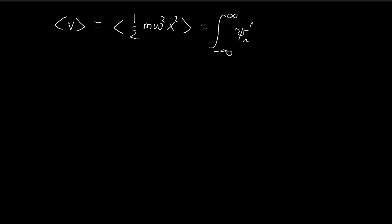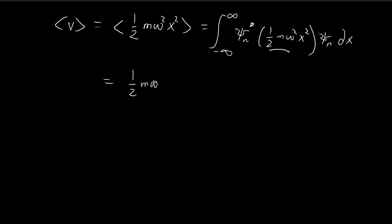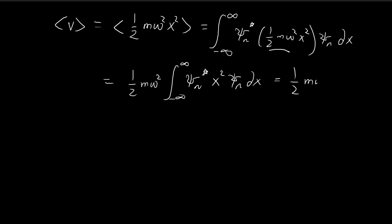We're considering the nth stationary state. In order to find the expected value, we place this term in the middle of the conjugate and ψ_n itself. These are just constants, so we can pull them out, and we get this formula over here. This integral is really just the expected value of x squared — so this is just these constants times the expected value of x squared.